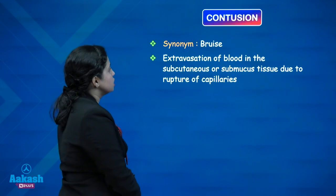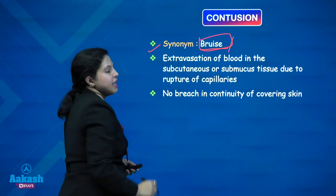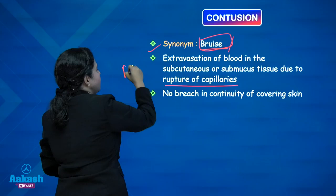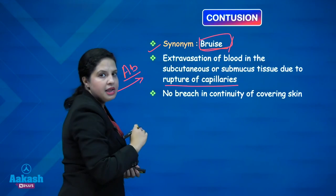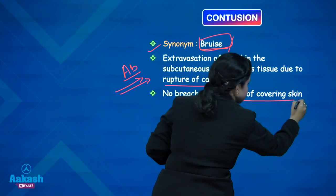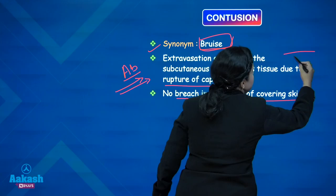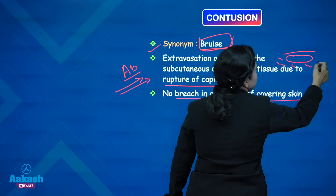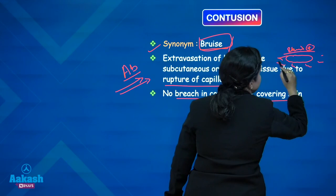Moving ahead with contusion — also known as a bruise. Contusion is the extravasation of blood in the subcutaneous or submucous tissue due to the rupture of capillaries. There is no breach in the continuity of the covering skin. Unlike abrasion where the epithelium was being denuded, in a bruise the skin integrity is preserved while blood extravasates underneath, causing the contusion.